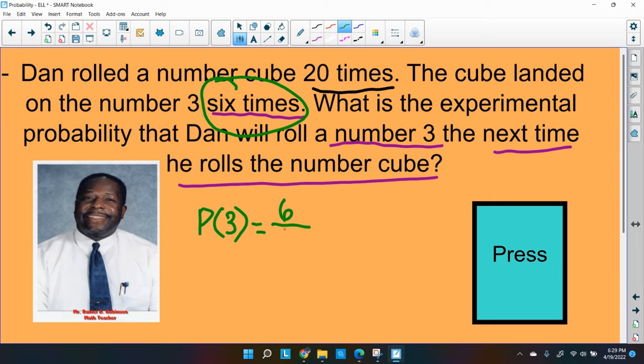So I'm going to say six times out of the 20. And out of, we know, means the fraction bar. So that's the experiment that happened. Six out of 20. So that's really his probability of getting a three if he rolls it again on his next time.